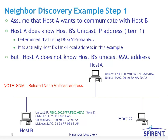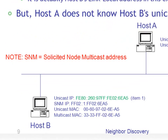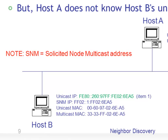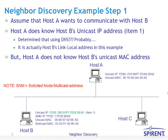In step one, assume host A wants to communicate with host B. Host A knows host B's unicast IP address — depicted in green in the graphic — most likely determined using DNS (domain name service). In this example it's host B's link-local address, but it could be any globally unique address assigned to host B. The problem is host A does not know host B's unicast MAC address. So host A knows host B's unicast IP address, but doesn't know a MAC address to which to send messages.